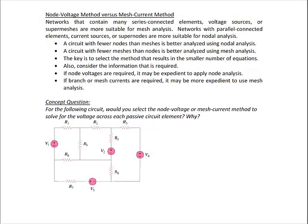Students sometimes ask whether it's better to do the node voltage method or the mesh current method on a certain circuit. It really doesn't matter — you'll get the same answer either way as long as you don't make a mistake. However, sometimes one method is more efficient. For example, if you have mostly series-connected elements similar to a loop, you would probably use KVL or the mesh current method.